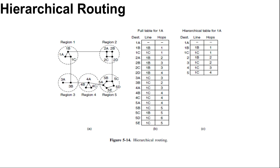When a single network becomes very large, an interesting question is generated: how many levels should the hierarchy have? For example, consider a network with 720 routers. If there is no hierarchy, each router needs 720 routing table entries. If the network is partitioned into 24 regions of 30 routers each, each router needs 30 local entries plus 23 remote entries for a total of 53 entries. If a 3-level hierarchy is chosen with 8 clusters, each containing 9 regions of 10 routers, each router needs 10 entries for local routers, 8 entries for routing to other regions within its own cluster, and 7 entries for distant clusters, for a total of 25 entries.